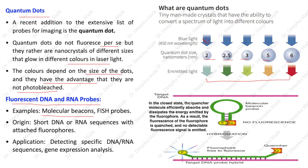Fluorescent DNA and RNA probes — examples include molecular beacons. As shown in the diagram, in the closed state the quencher molecule efficiently absorbs and dissipates the energy emitted by the fluorophore, so no detectable fluorescence signal is emitted. When the beacon opens and hybridizes with the target DNA molecule, the quencher is far from the fluorescent molecule and the signal can be detected. Applications include detecting specific DNA or RNA sequences and gene expression analysis.